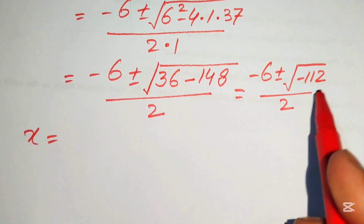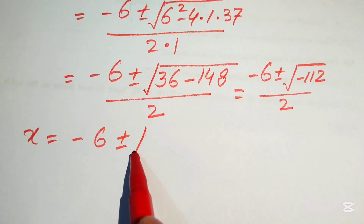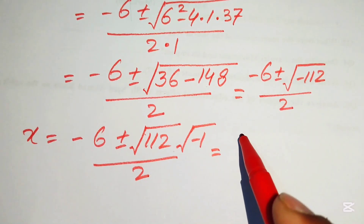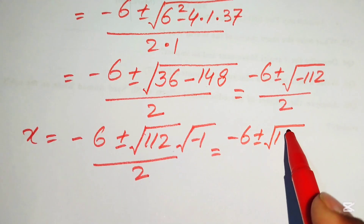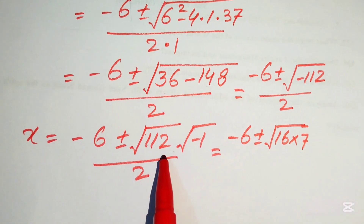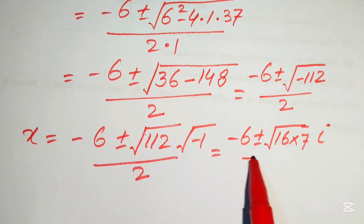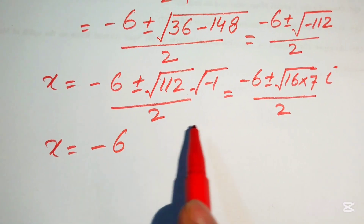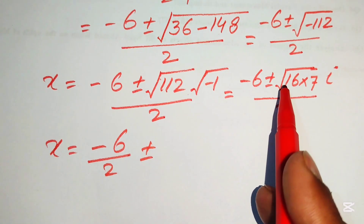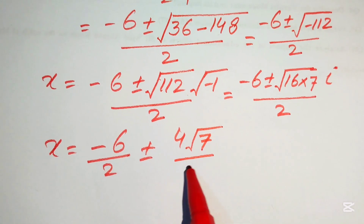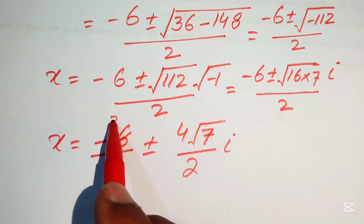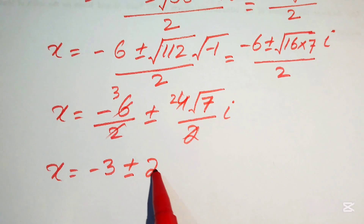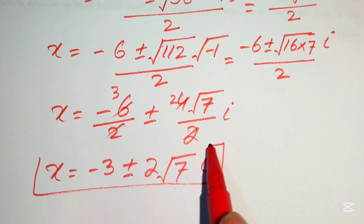We rewrite the radical as the square root of (112 times minus 1). Since 112 equals 16 times 7 and the square root of minus 1 equals i (iota), we get minus 6 plus or minus 4√7·i, all divided by 2. Simplifying: x equals minus 3 plus or minus 2√7·i.